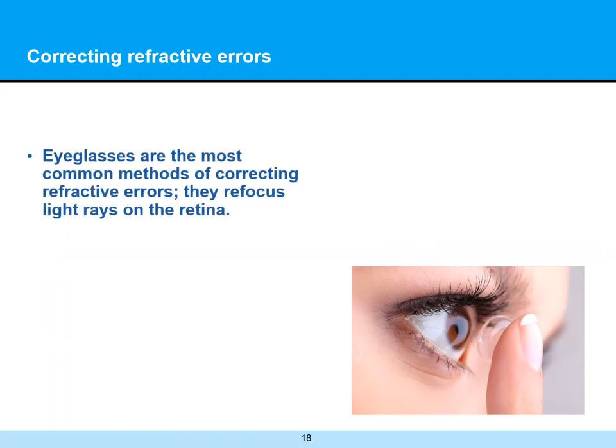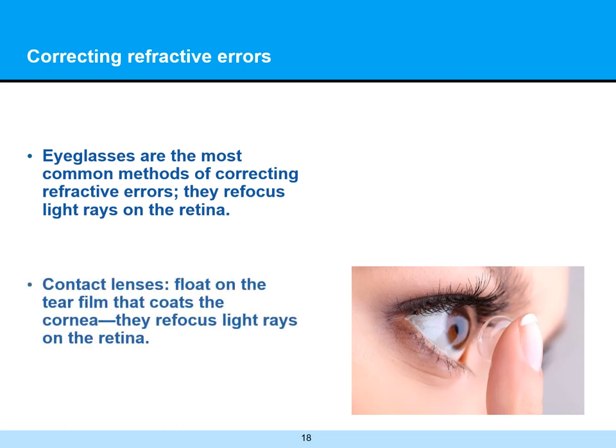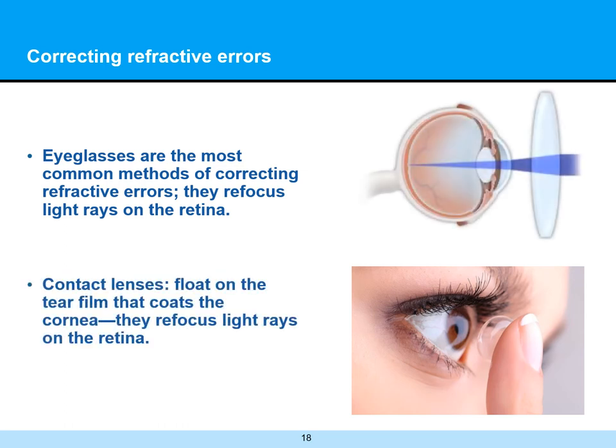Some ways of correcting refractive errors: eyeglasses are the most common method — they help to refocus light rays on the retina. Another way is to wear contact lenses, which float on the tear film and coat the cornea, refocusing those rays onto the retina. Both eyeglasses and contact lenses are the most common ways to correct refractive error.